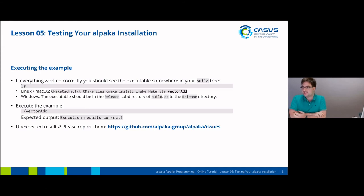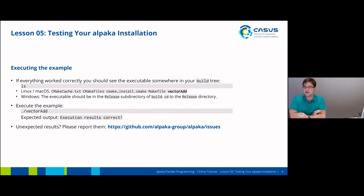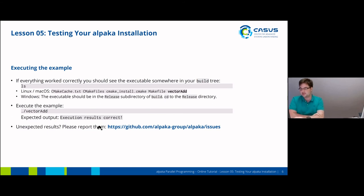Once the build is completed, you should see the executable somewhere in your build tree. On Linux and macOS, this will be directly in the build directory, so the executable will be called VectorAdd and should be visible by just typing ls. On Windows systems, the executable will probably be in the release subdirectory of the build directory. You can then execute the VectorAdd executable, and the expected output is always 'execution results correct'. If you get any different output, please report it to us.